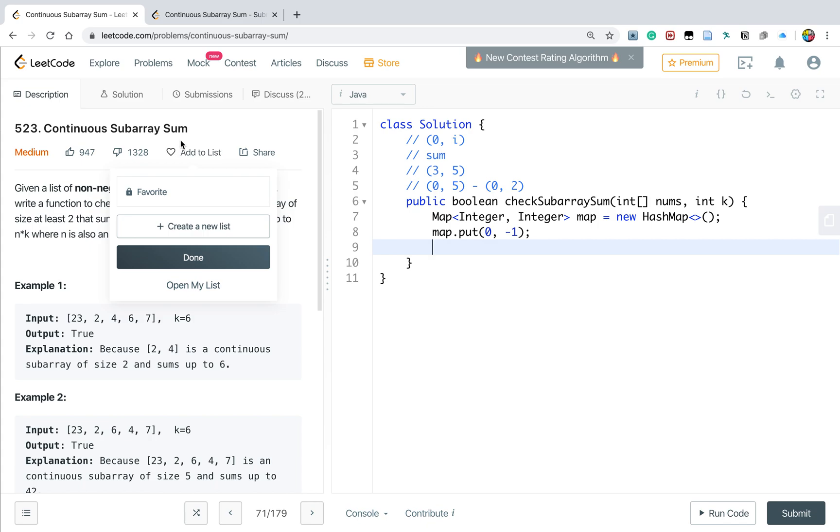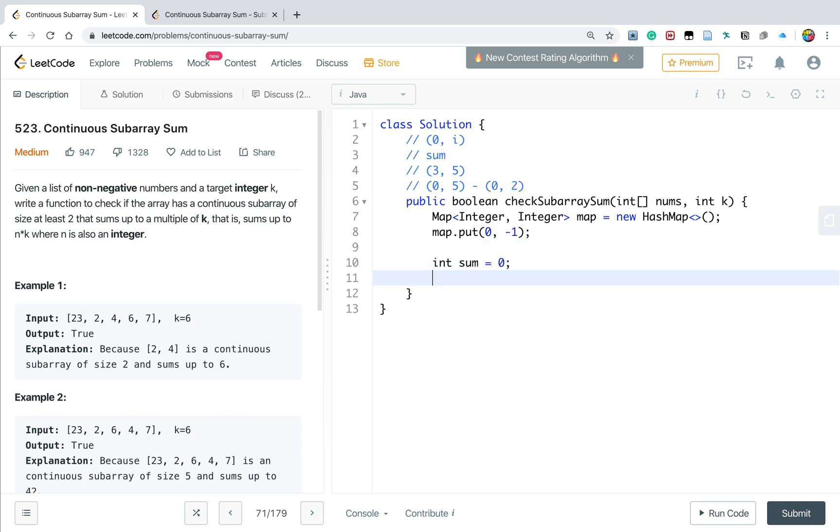In every subarray sum problem, we need to handle zero. Sometimes we need to put zero if it's a count; sometimes we need negative one—it depends on the specific case. You need to think about this special case.